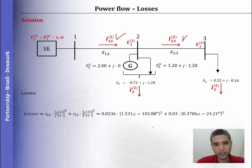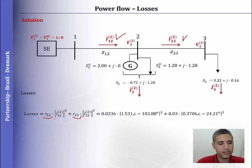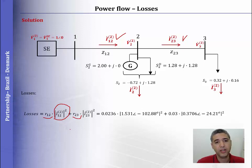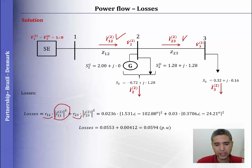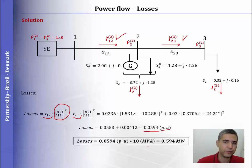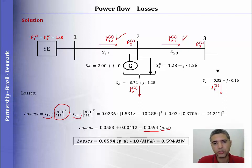Since we have the voltage and the current, we can compute the losses by multiplying the resistance of each line by the square of the current in that line. This gives us the value in per unit. If you want the value in megawatts, you need to multiply by the base power.